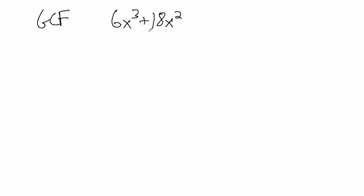Part of this process is going to be the same thing we've been doing. We're going to find the greatest common factor between 6 and 18. So remember, 6x cubed and 18x squared are the terms — 6 and 18 are called coefficients. We'll find the GCF of the coefficients, and then separately, we'll find the greatest common factor of the variable parts, x cubed and x squared.